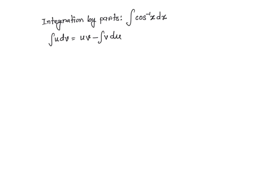I'm going to go ahead and do the substitution. My u is going to be cosine inverse of x, and my dv is going to be dx.